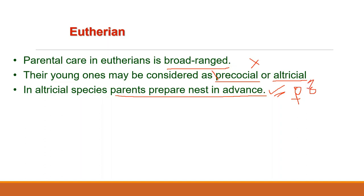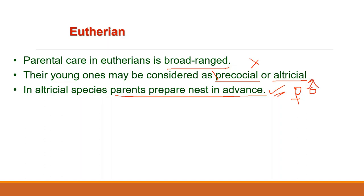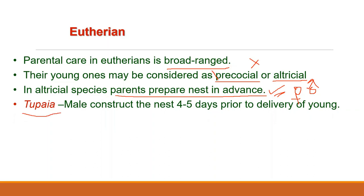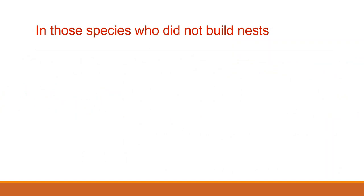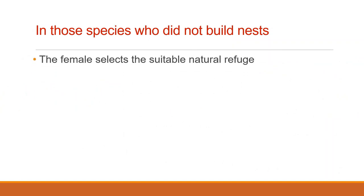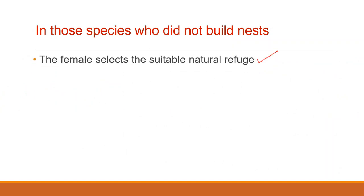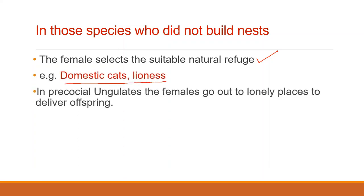Interestingly, in Tupaia, the male constructs the nest four or five days prior to delivery of the young by the female. In those species which do not build nests, the females select suitable natural refuges, for example domestic cats and lionesses. In precocial ungulates, the females move out to lonely places to deliver the offspring. This is frequently observed in sheep, goats, and many other bovids.